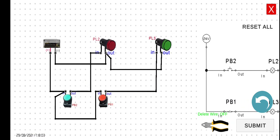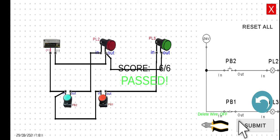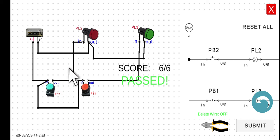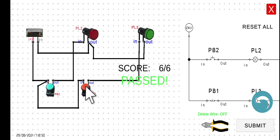It seems our connection is correct, so let's click the submit button to verify. We passed — all six wires are connected correctly. Now let's start the simulation. The pilot lamp connected to the normally closed push button is already turned on, and the lamp connected to the normally open push button is off. Clicking PB2 turns PL2 on; releasing turns it off. Clicking PB1 turns PL3 off; releasing it returns PL3 to its on state. See you in the next lecture.